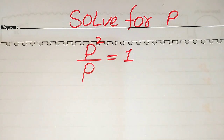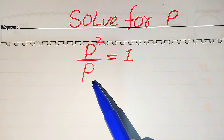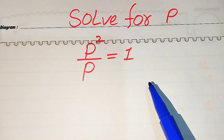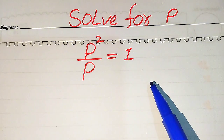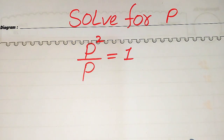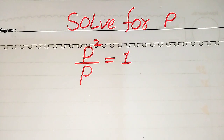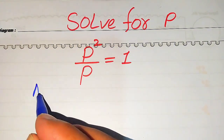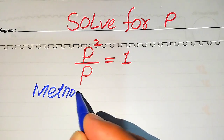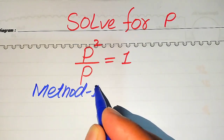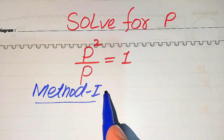Hello everyone. How to solve this problem for the values of p if we have p squared divided by p equals 1, and we solve for all values of p. First we find all the roots of this equation, and at the end we verify which roots are solutions and which are extraneous roots. We will solve this problem using two methods.